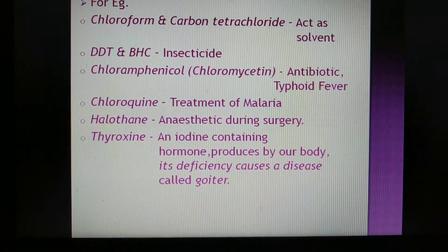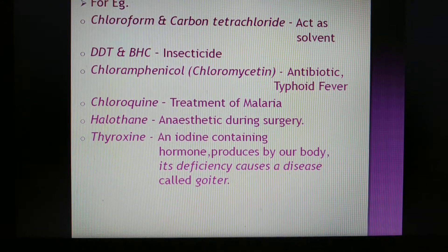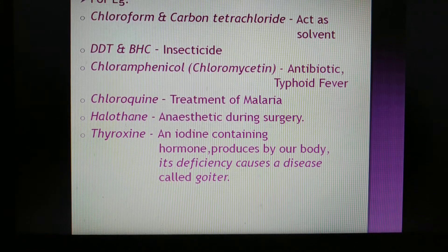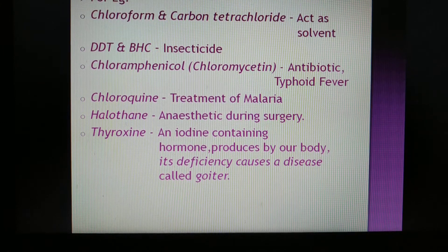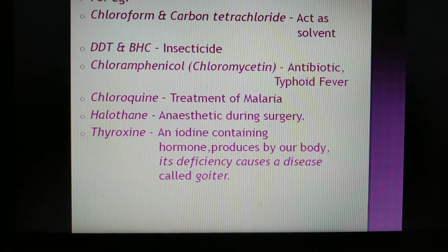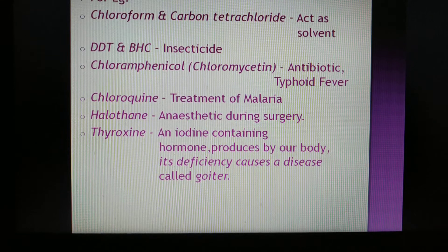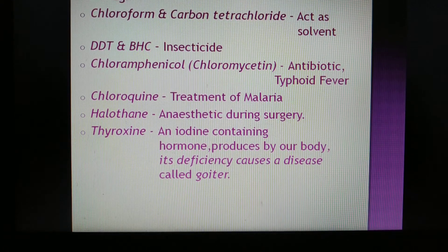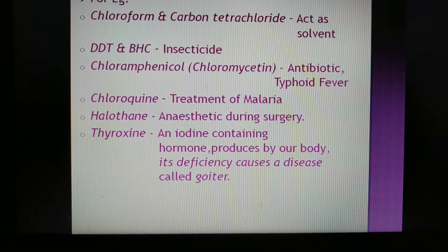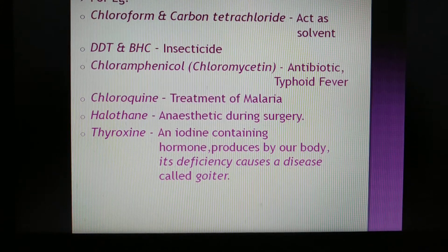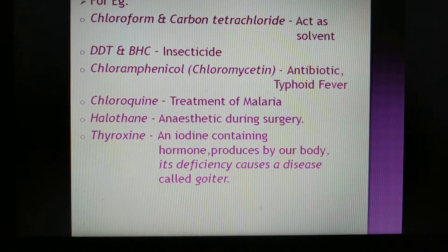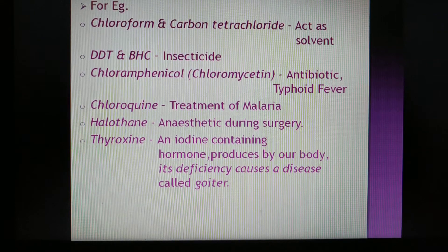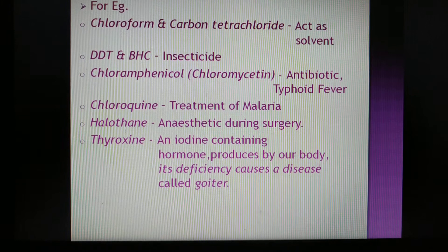Chloramphenicol — also called chloromycetin — is an antibiotic used in typhoid fever. Chloroquine is a medicine used for the treatment of malaria. Halothane is an anesthetic used during surgery. Thyroxine is a well-known iodine-containing hormone produced by our body. A deficiency of thyroxine causes a disease called goiter, where the throat swells. Consuming iodized salt helps the body produce thyroxine properly and prevents goiter.